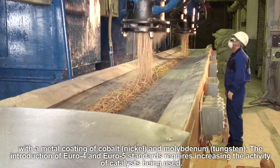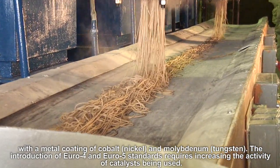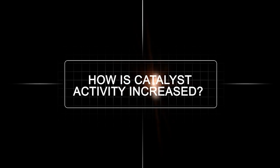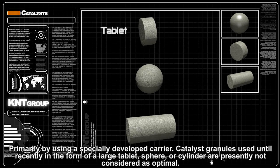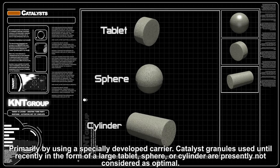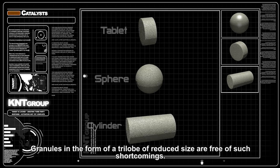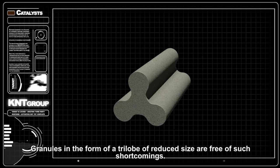The introduction of Euro 4 and Euro 5 standards requires increasing the activity of catalysts being used. How is catalyst activity increased? Primarily by using a specially developed carrier. Tablet, sphere or cylinder are presently not considered as optimal. Granules in the form of a trilobe of reduced size are free of such shortcomings.